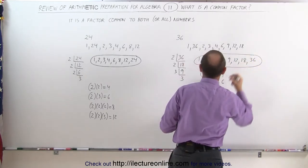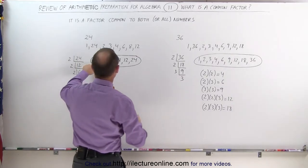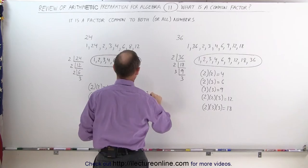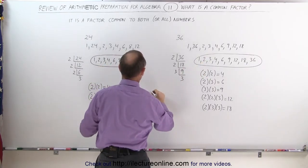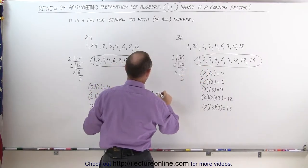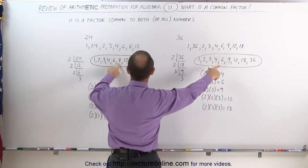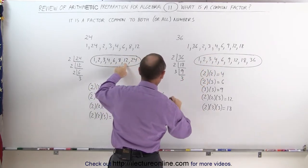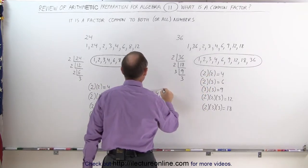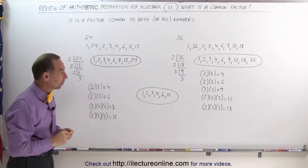Now, which of these factors are common — meaning what numbers appear in both lists? We have 1 and 1, so those are common. We have 2 and 2. We have 3 and 3. A 4 and a 4. A 6 and a 6. Here we have an 8, but it's not in the 36 list, so we can't use that. There's a 9 in the 36 list, but not in the 24 list — not common. We have 12 in both. 24 is not in the 36 list. So the common factors are: 1, 2, 3, 4, 6, and 12.